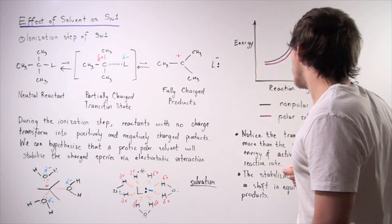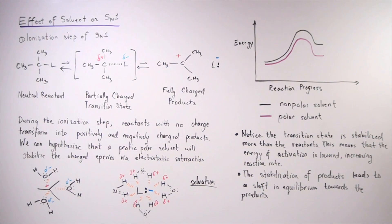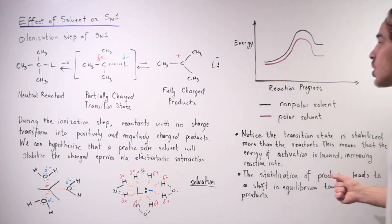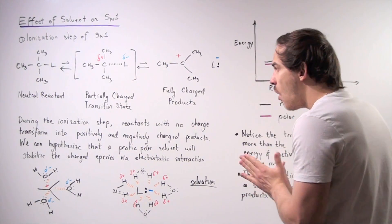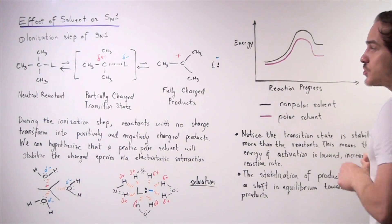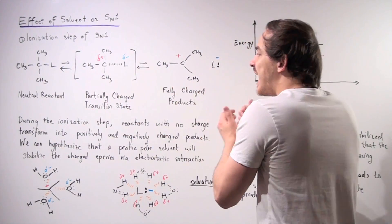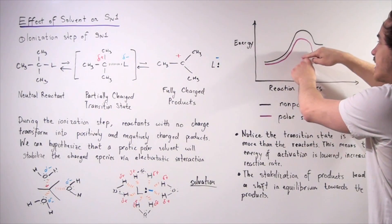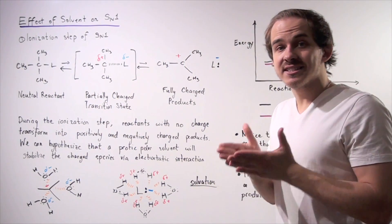Because the activation energy is lowered by the polar solvent, the rate of reaction increases. At the same time, because the energy of the final products is lower, the equilibrium shifts toward the product side — toward these intermediates with charges. The transition state is stabilized more than the reactants, lowering the activation energy and thereby increasing the rate of reaction. The stabilization of the products leads to a shift in equilibrium toward the products, meaning we produce more of them, and we produce them faster. Looking at the rate law, what changes is the rate constant K — it increases, increasing the overall rate of our reaction.